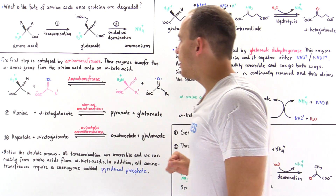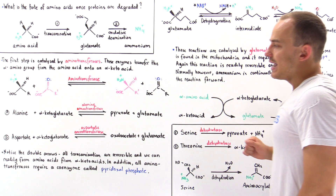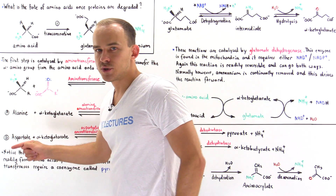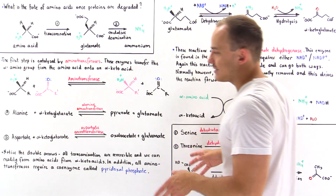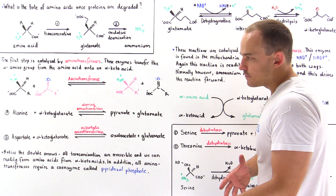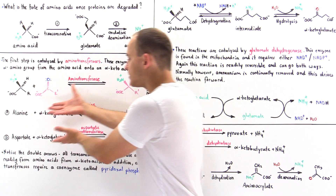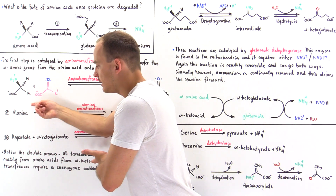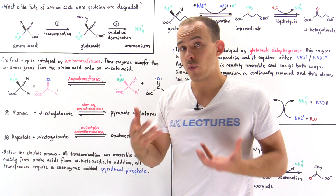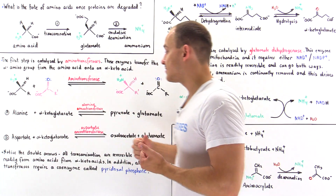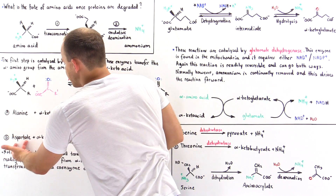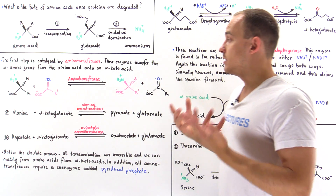One important thing about this process is it goes both ways — this reaction exists in equilibrium. Going forward, our cells can break down alanine, aspartate, and other amino acids. But going in reverse, it gives us a way to form new amino acids. So we can begin with these molecules and go on to form alanine or aspartate if our cell actually needs to do that.